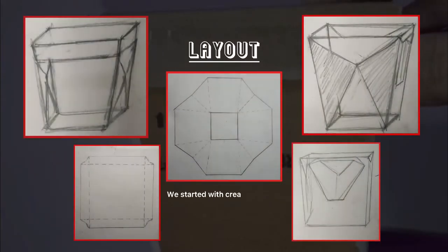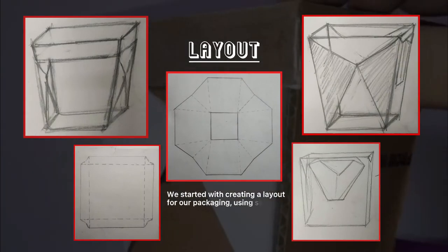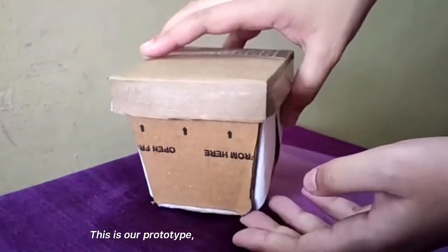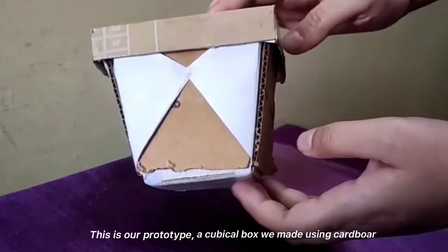We started with creating a layout for our packaging using Sketchit. This is our prototype, a cubicle box we made using cardboard.